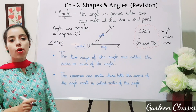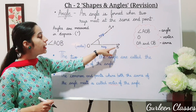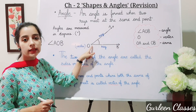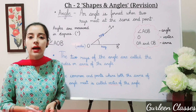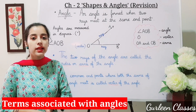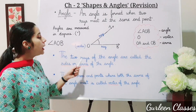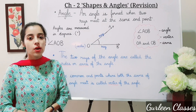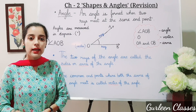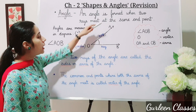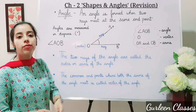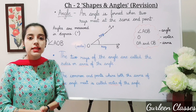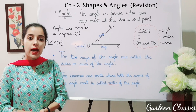An angle is formed when two rays meet at the same endpoint. Now, what are the terms associated with an angle? The two rays of the angle are called the sides or arms of the angle. Here you can see the two rays of the angle — they are called the sides or arms of the angle.